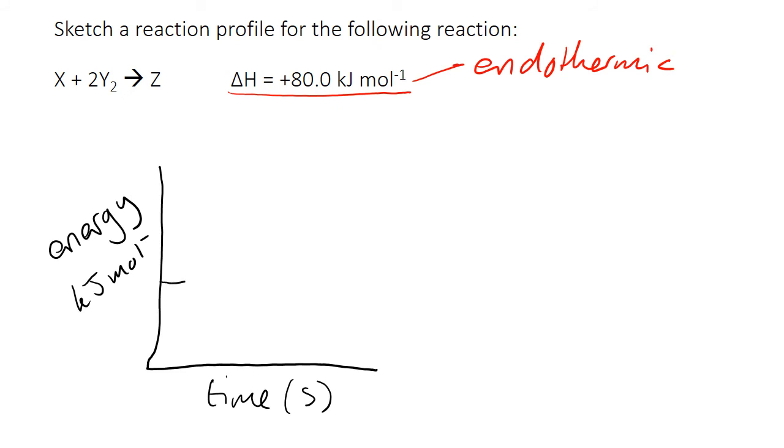So if we start off with our reactants, now our reactants here as we said are X plus 2Y2, showing that Y is diatomic and there are two moles of them. And our product Z must have, because the reaction is endothermic, more energy than the reactants are starting with.